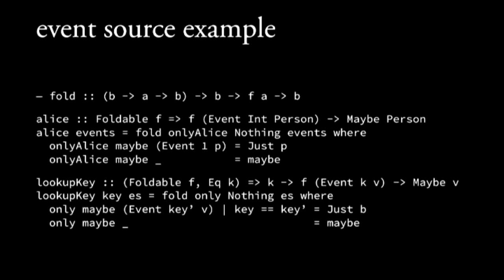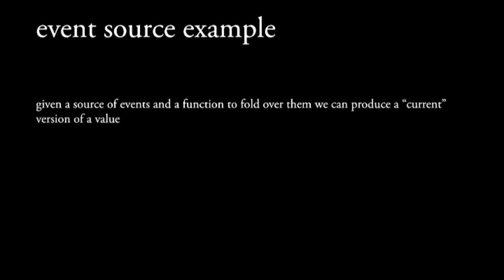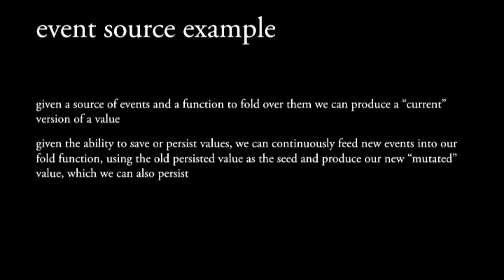This is a generalized version of it. People were asking about how much generalization and abstraction helps — in this case I've generalized it so it just needs some way of comparing keys, and given a key and some foldable of events, it can produce a Maybe value. Given our source of events, we can produce the current version of that value. Additionally, if we add the ability to persist that current version of a value, then we can continuously feed new events as they come in into our event source and produce this new current version — effectively getting the ability to sort of mutate.